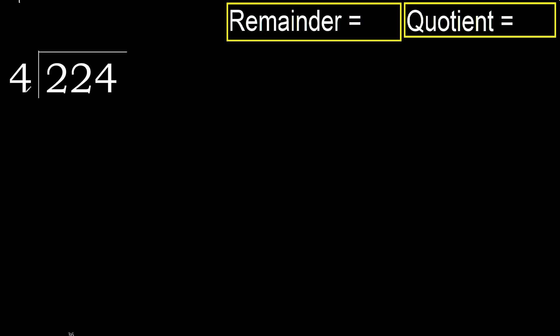224 divided by 4. 2 is less, therefore next. 22 is not less, therefore with 22. 4 multiplied by which number is nearest to 22 but not greater?